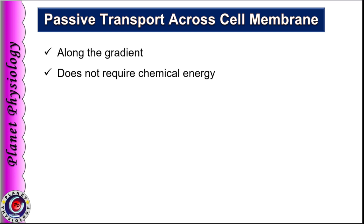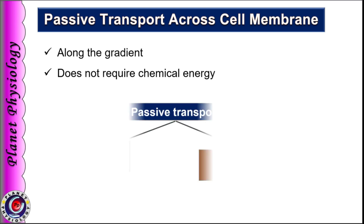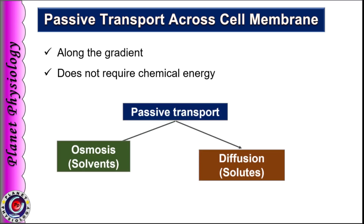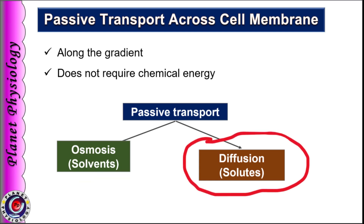Passive transport is of two types: diffusion and osmosis. Diffusion is the term used for transport of solutes, while osmosis is the term for transport of solvent. Today we shall study only the diffusion part of passive transport.